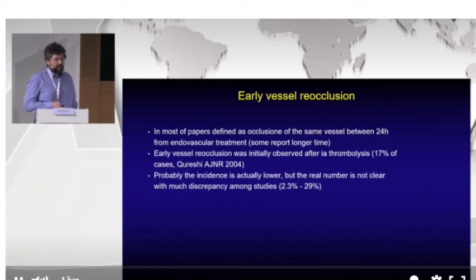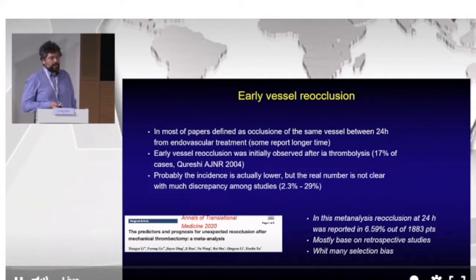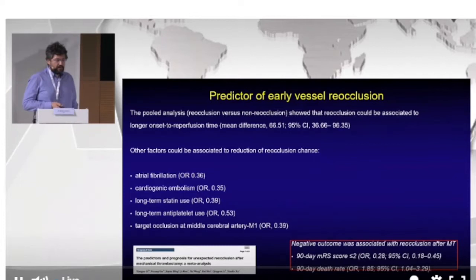The actual incidence is probably lower, but the real number is not very clear because there is much discrepancy among studies — ranging from 2% to 29%. One meta-analysis reported a reocclusion rate of about 6.5% out of almost 2,000 patients, but this was based only on retrospective studies with many selection biases. This analysis concluded that there are some factors associated with early reocclusion.